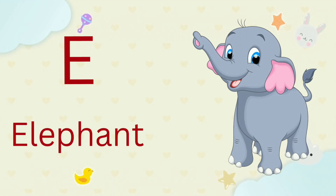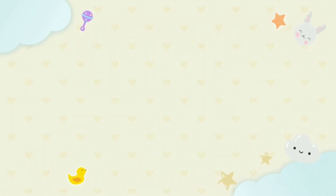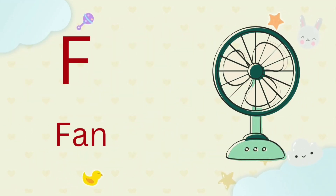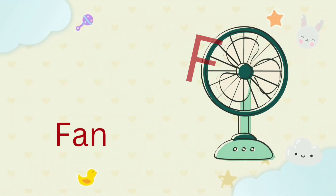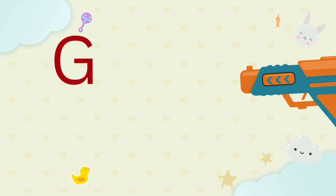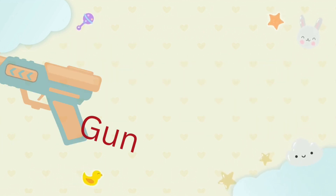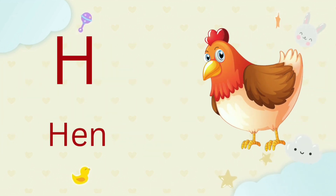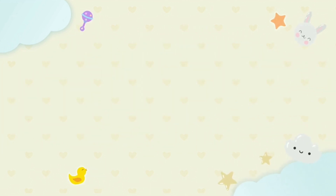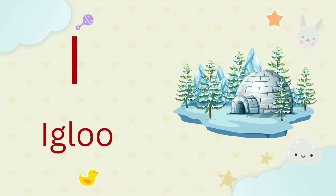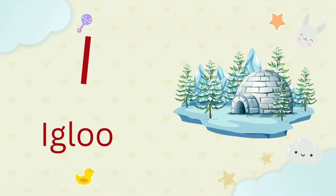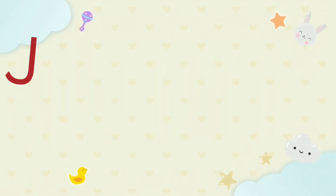E for elephant, F for fan, G for gun, H for hen, I for igloo.